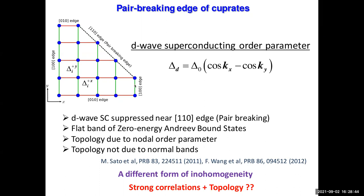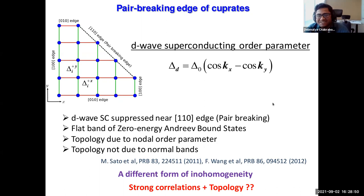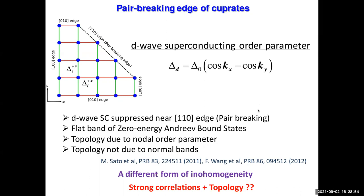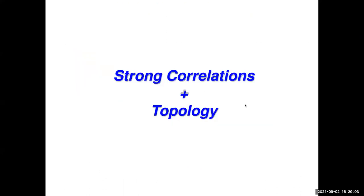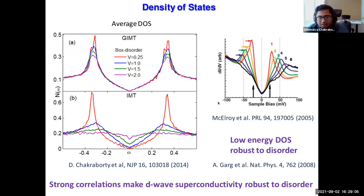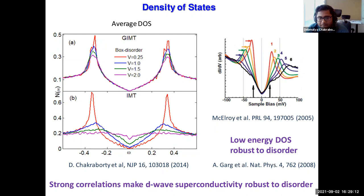A question from the audience: you talked about the d-wave superconducting gap being robust to disorder with uncorrelated disorder drawn as independent random numbers — but if you have correlated disorder, will it still be robust?